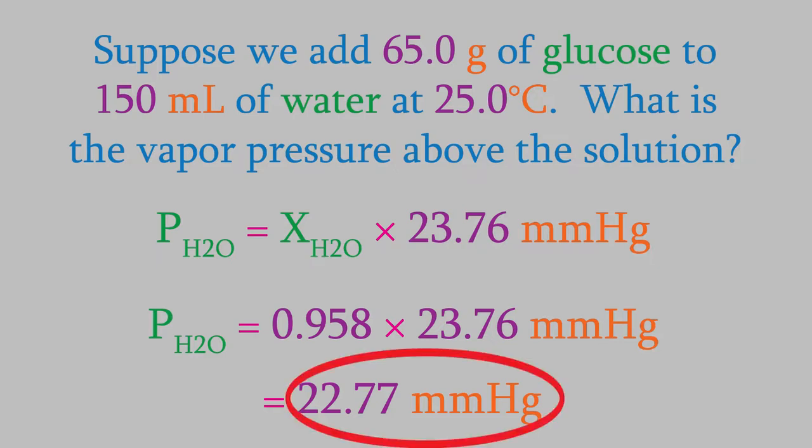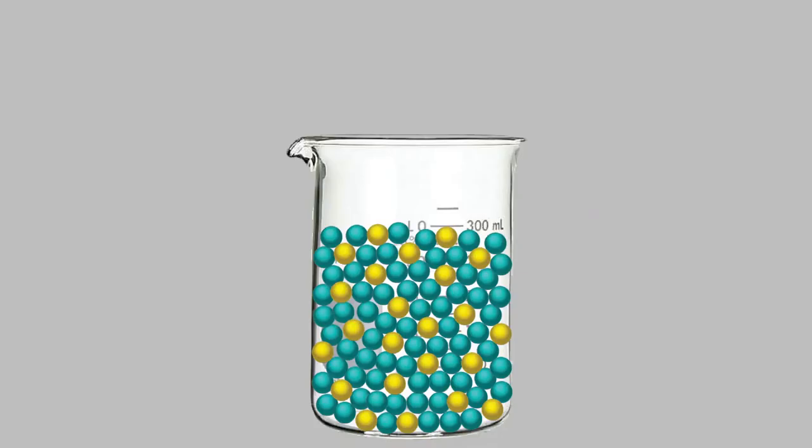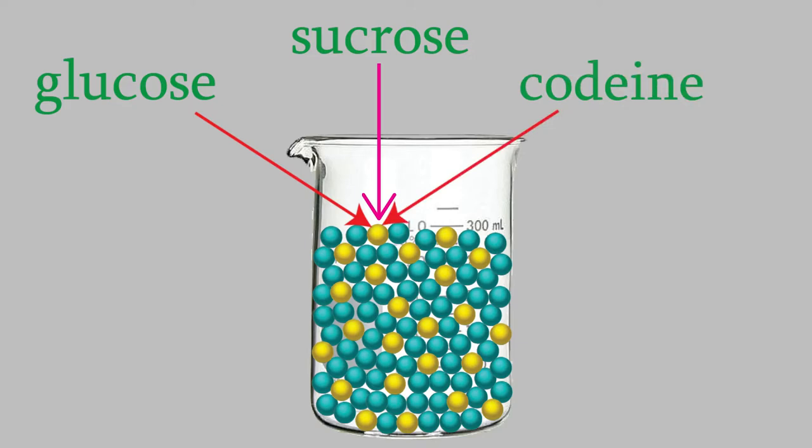Notice that we needed the mole fraction of the solvent, water, not the glucose. That's because the vapor pressure we're calculating is the vapor pressure for the water. Also, notice that it didn't really matter that the solute was glucose. Our solution had 0.361 moles of glucose, but we would have gotten the same result if it had been 0.361 moles of sucrose, or codeine, or another solute. That's because all that matters is how much of the solute we have—in other words, how many moles, not what the solute actually is. That'll be true for all of the colligative properties. It's not what the solute is, it's the amount of solute that's important.